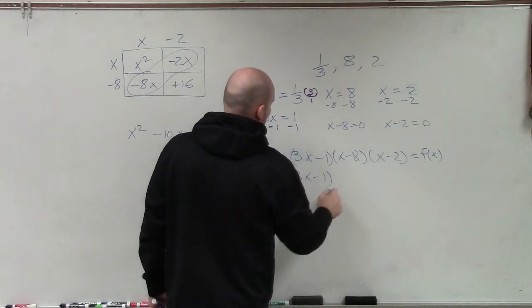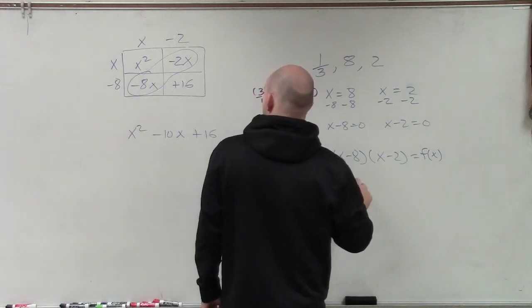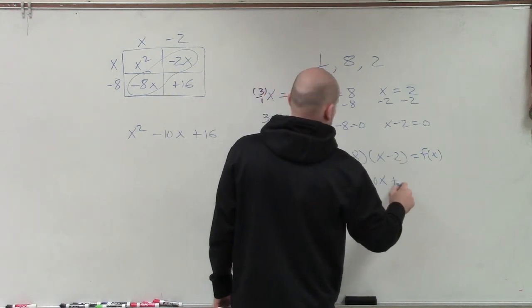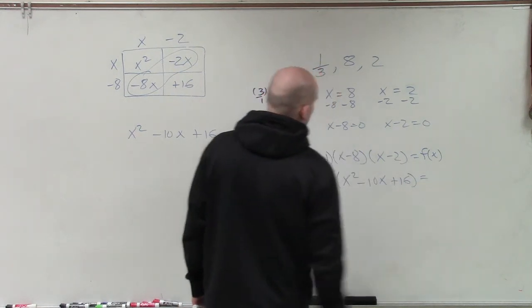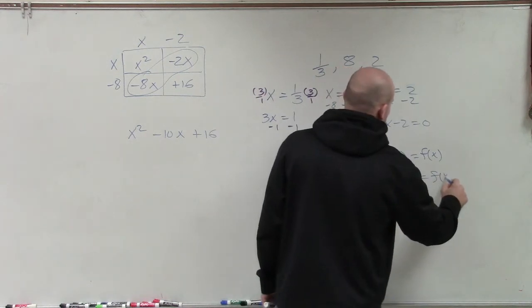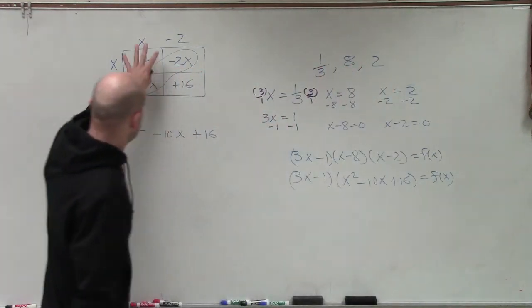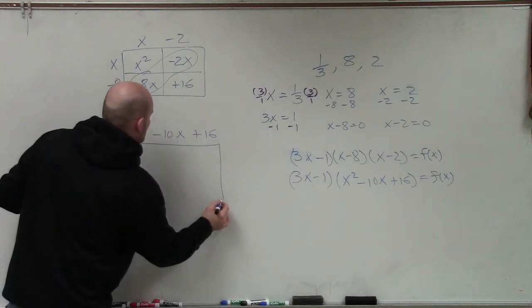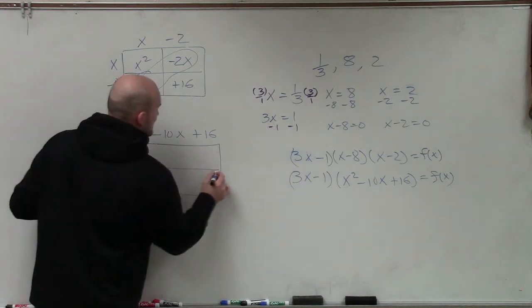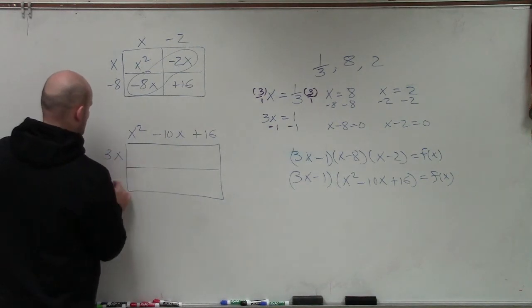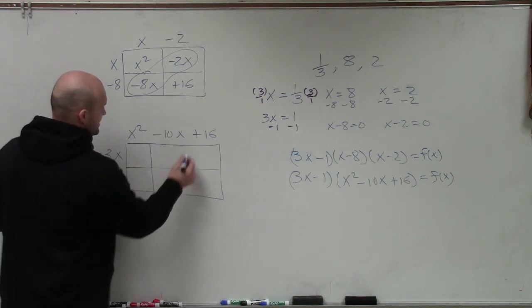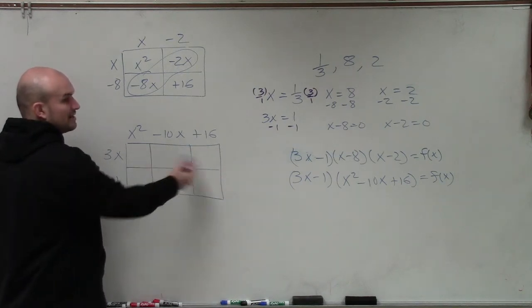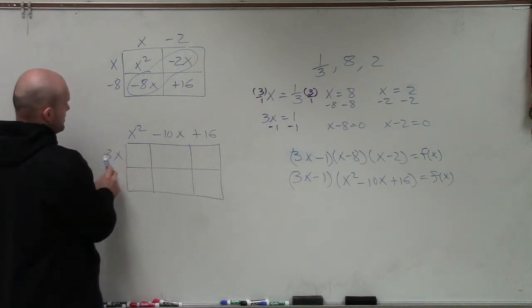But now I have to multiply that times 3x minus 1. So again, you could go back and use FOIL if you like to, but I like to use this box. But now instead of having two terms, now I have three terms. So again, I'm going to create another box. And now on this left side, I'm going to multiply it by 3x minus 1. So then between each, since I have three terms now, I'm going to make that into three columns here on the top.